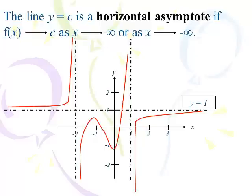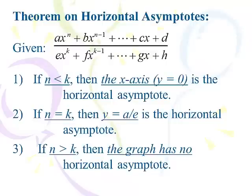Now vertical asymptotes — those are sacred. You never cross a vertical asymptote. Here's the theorem on horizontal asymptotes, and people just hate this. But there are only three cases. The horizontal asymptote will either be the x-axis y equal 0, the ratio of the lead coefficients, or there won't be any. As long as you write your numerator and denominator in decreasing degrees, we only concern ourselves with the lead terms x to the n and x to the k.